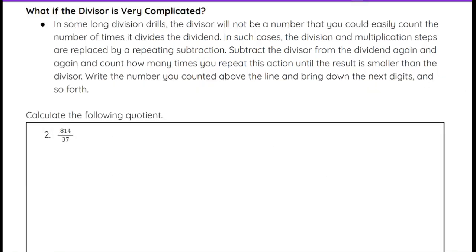Now, what if the divisor is very complicated? In some long division problems, the divisor will not be a number you can easily count by to determine how many times it divides the dividend. In such cases, the division and multiplication steps are replaced by repeated subtraction — we continue to subtract the divisor, and the number of times we subtract tells us what number goes at the top of the quotient line.